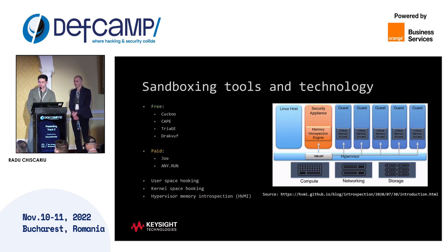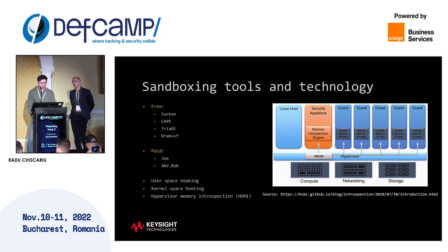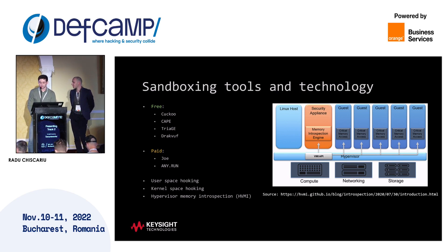As a toolset for doing sandboxing, we have free tools and paid tools. The most well-known free sandbox is the CAPE v2 sandbox. There are also paid sandboxes such as Joe Sandbox and any.run. The difference between them is related to where the monitoring of malware behavior happens. For free sandboxes, the monitoring happens in user space. For paid services, they are more advanced, doing the monitoring either in kernel space or in hypervisor space.